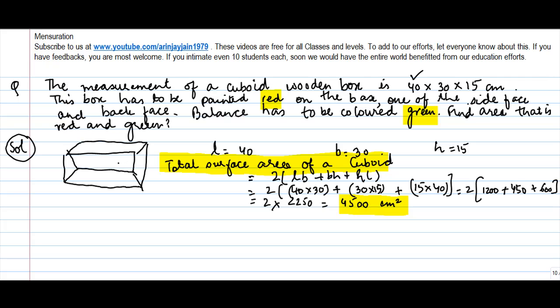So, we need to find out how much is the area which is painted red and how much is the area which is painted green. Well, whatever might be these equations, we know that the total area is 4500 centimeter square. So, let's find out, because we are given the dimensions of which sides are red and the number of sides is less. So, let's find out the area covered by red.